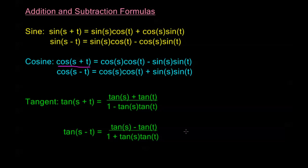We can do a similar thing with sine of s plus t using the same diagram. Once we have the addition formulas, the subtraction formulas follow by plugging in negative t and using the even-odd properties. Tangent follows by taking the ratio sine over cosine and simplifying. So these are our addition and subtraction formulas — make sure to become familiar with them, as the next two or three videos will focus on examples using these formulas.